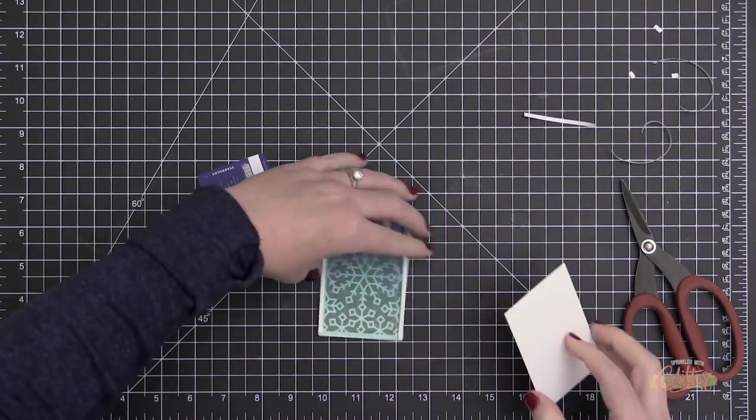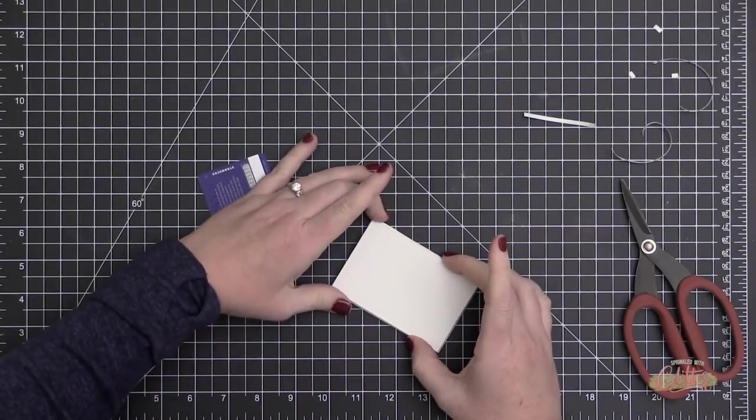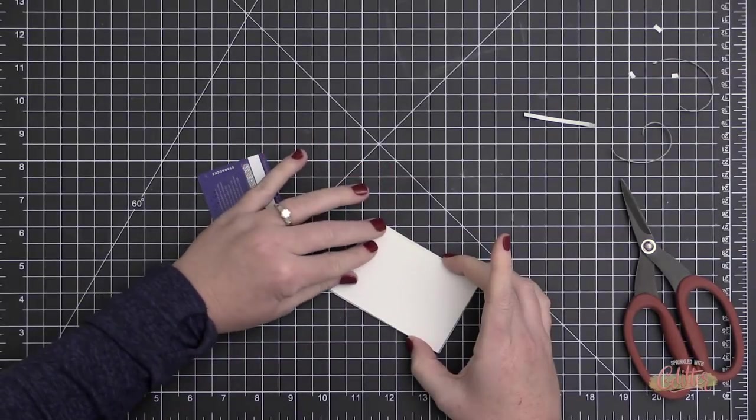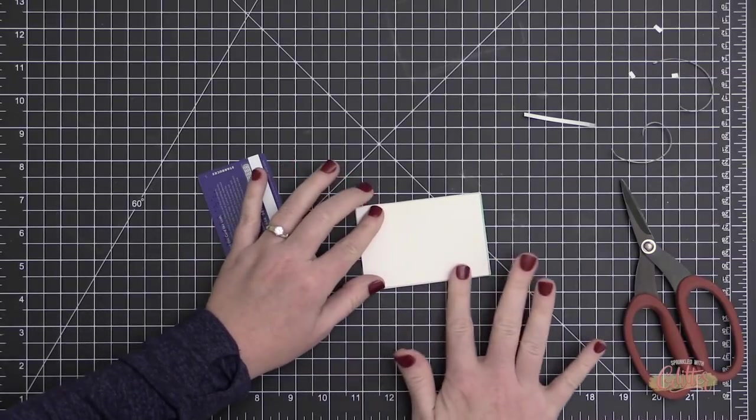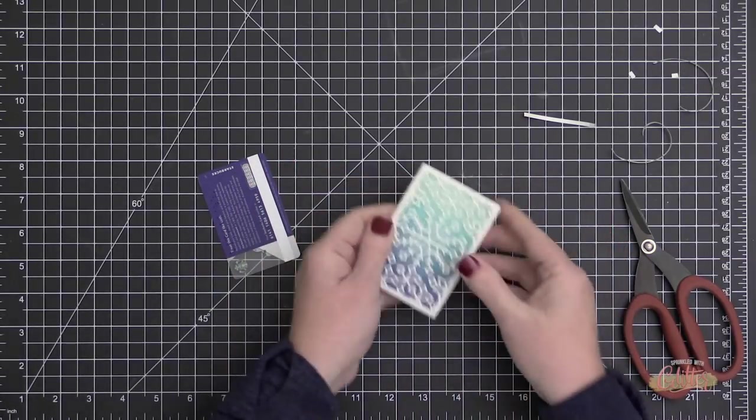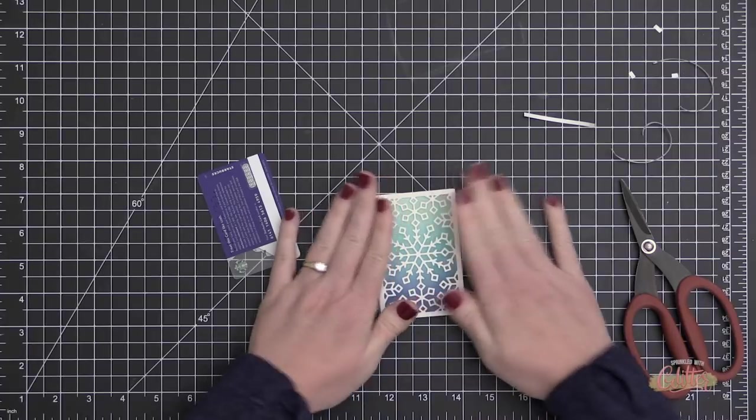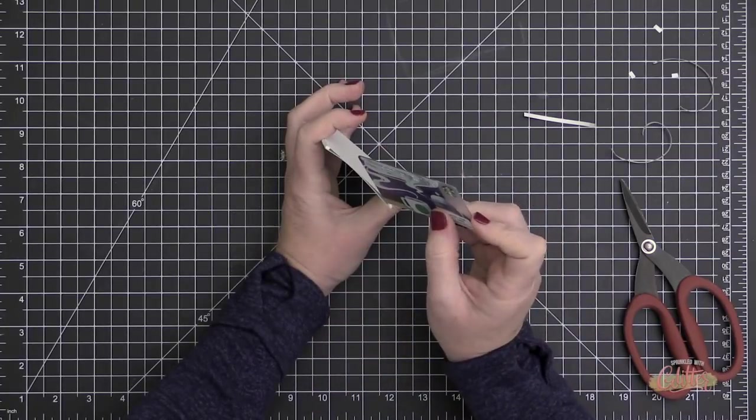Now once I have all my foam adhesive in place, I'm going to remove the backer, and then I'm going to take this rectangle that I cut from plain white cardstock and place it over the back. This is going to create a pocket for my gift card.